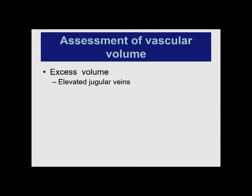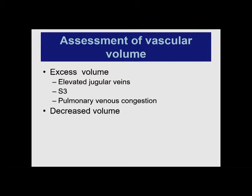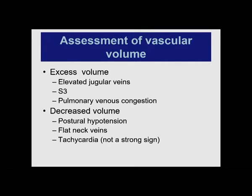For excess intravascular volume: elevated jugular veins, third heart sound, pulmonary venous congestion on X-ray — that is about it. For decreased volume: the best test is postural hypotension; neck veins should be flat. Tachycardia is a lousy sign. We really do not have great signs for whether you are over or under in intravascular volume. You usually have to empirically test this by doing something and seeing whether it changes. Dynamic techniques tell you the patient will respond but do not tell you what the volume actually is.